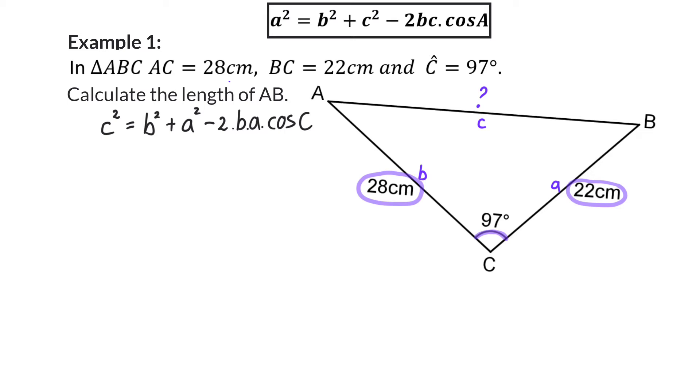This process to be able to change the cos rule to fit the letters in your triangle is very important. Therefore, you need to always remember that the side on the left of the formula and the angle used on the right always form a pair. Now we can substitute all the given information and we know that B is 28, A is 22, and now we subtract two multiplied with the values of B and A, multiplied with cos of 97.